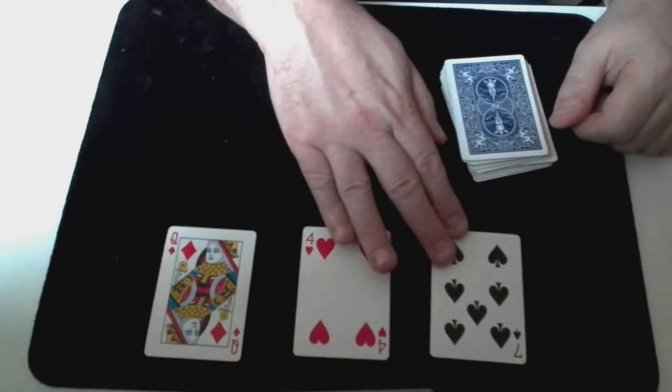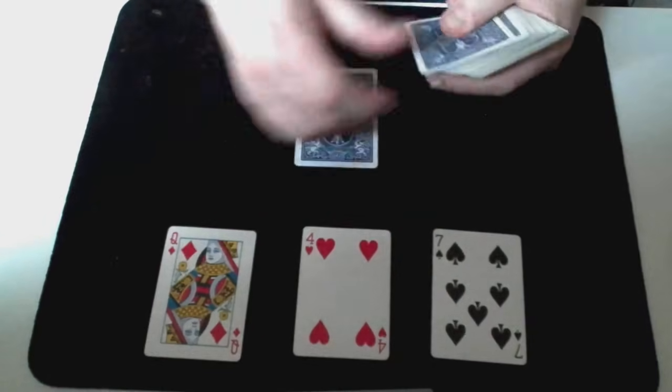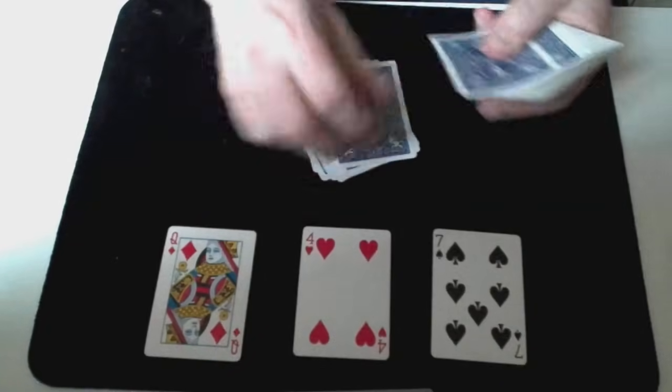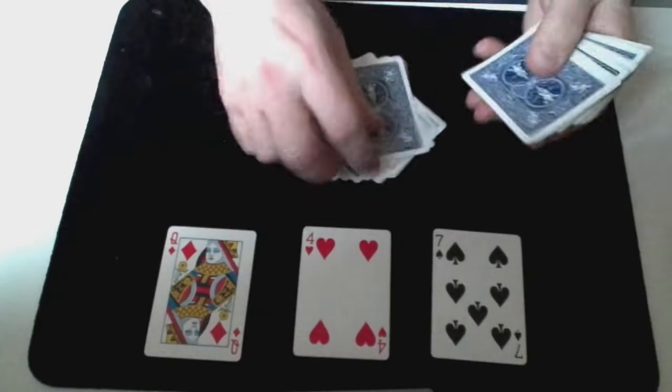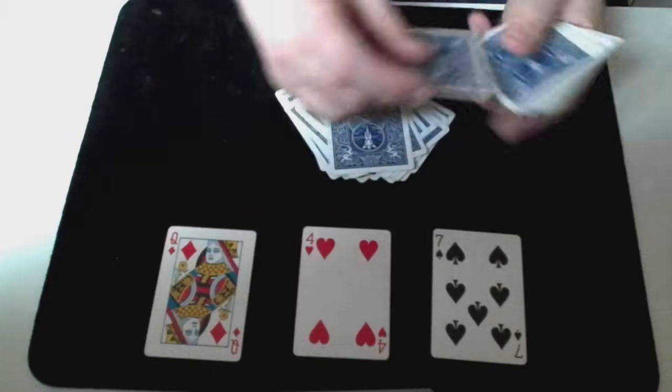So now in this case we deal down to the 23rd card from the top. 1, 2, 3, 4, 5, 6, 7, 8, 9, 10, 11, 12, 13, 14, 15, 16, 17, 18, 19, 20, 21, 22, 23.